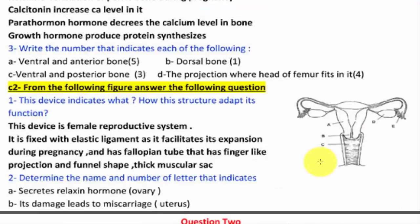This diagram indicates the female reproductive system. How does the structure adapt to its function? It is fixed with elastic ligaments which facilitate its expansion during pregnancy, and has fallopian tubes with finger-like projections. It also has a thick muscular wall.